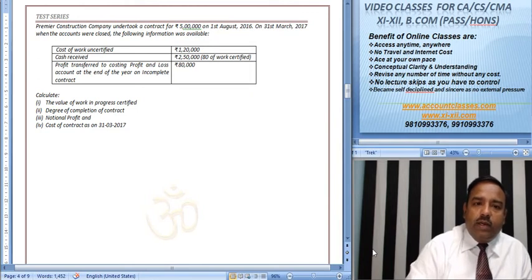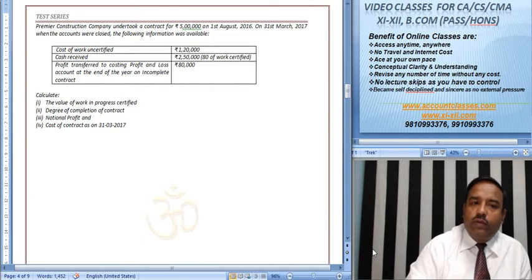Premium Construction Company undertook a contract for Rs. 5 lakh on 1st August 2016. On 31st March 2017, when the accounts were closed, the following information is available.